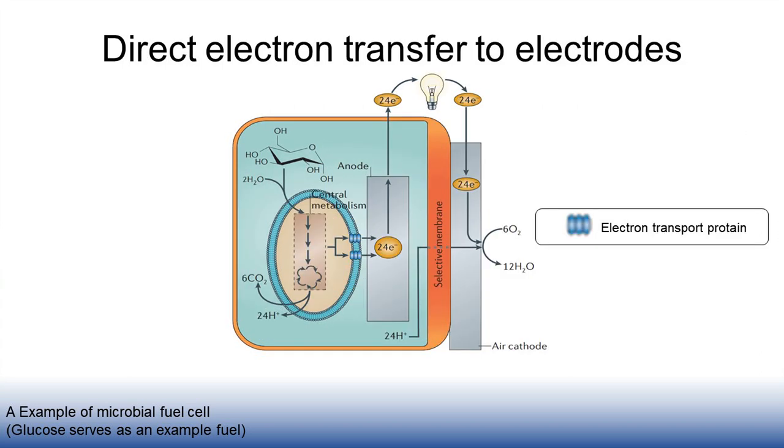This shows the oxidation of glucose to carbon dioxide with direct electron transfer to the electrode surface. Glucose is taken into the cell and oxidized to carbon dioxide by typical central metabolic pathways such as the tricarboxylic acid cycle.